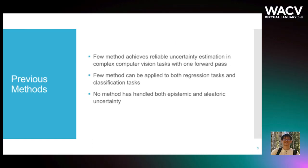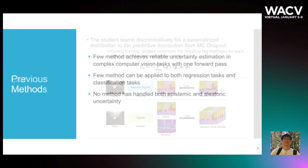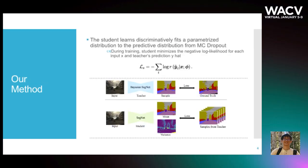Previous work has explored various ways to accelerate uncertainty estimation. However, few methods manage to produce reliable uncertainty estimation in complex computer vision tasks with one forward pass. Few methods are proven to be applicable to both regression and classification tasks in general. No method has handled both epistemic and aleatoric uncertainty. We provide a method that manages to fill all those gaps.